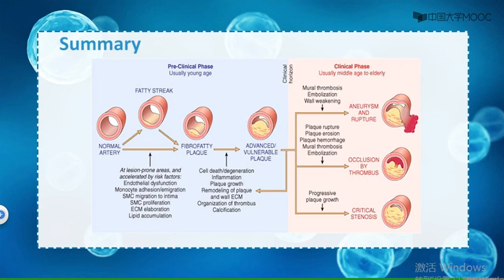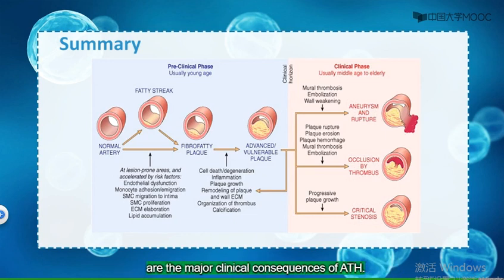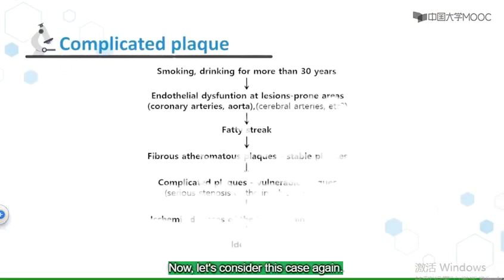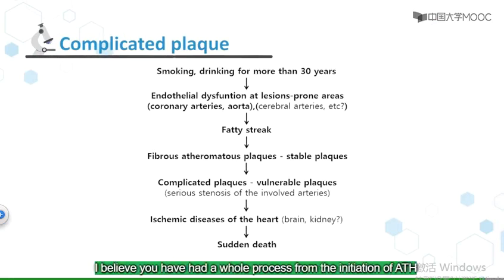In other words, myocardial infarction (heart attack), cerebral infarction (stroke), aortic aneurysm, and peripheral vascular diseases such as gangrene of extremities are the major clinical consequences of ATH. Now, let's consider this case again. I believe you now understand the whole process from the initiation of ATH to his sudden death, as shown in this slide.